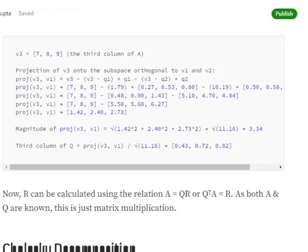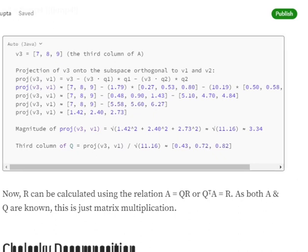Now going for the third one, we will be calculating projections from v3 to v1 like this: v3 minus v3 dot q1 into q1 minus v3 dot q2 into q2. As I told you, as we are moving ahead, we need to make it normal to all the existing orthonormal vectors that we have already calculated. Again, the whole mathematics goes the same, and we get a final column for Q.